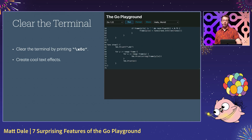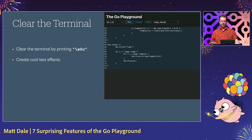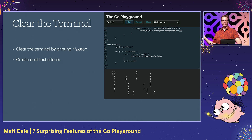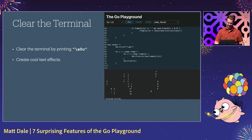You can clear the output terminal by printing a control character. In this example, we're creating a shoddy approximation of the matrix rain effect in the Go Playground. That was the most fun of these to create.